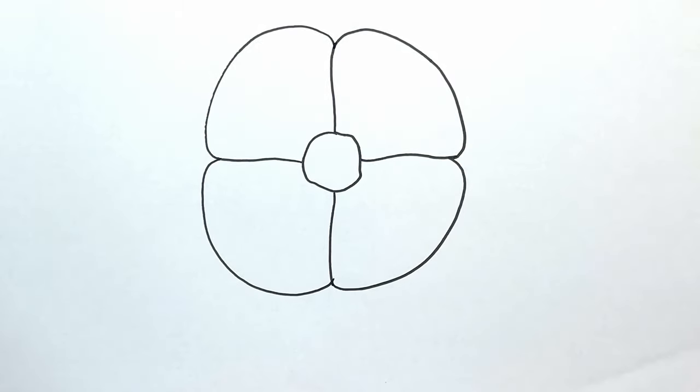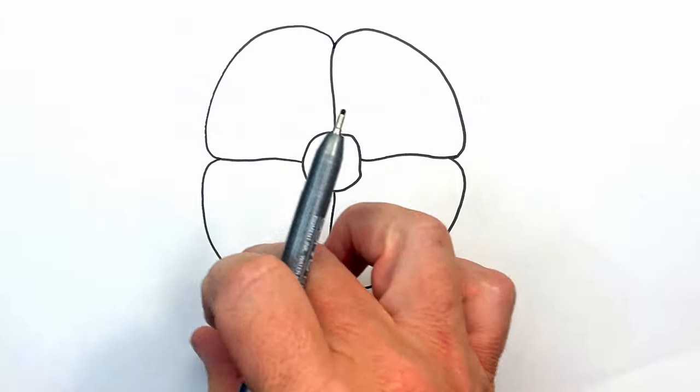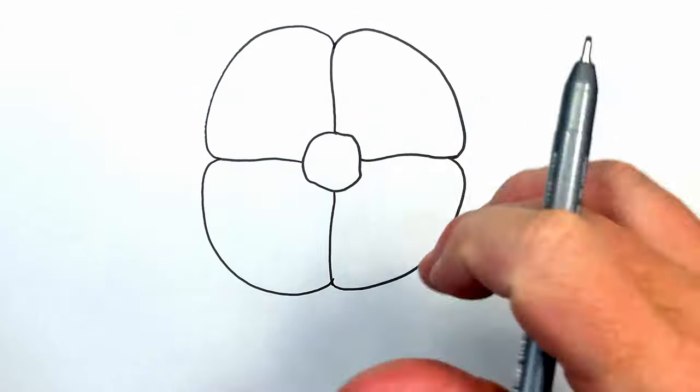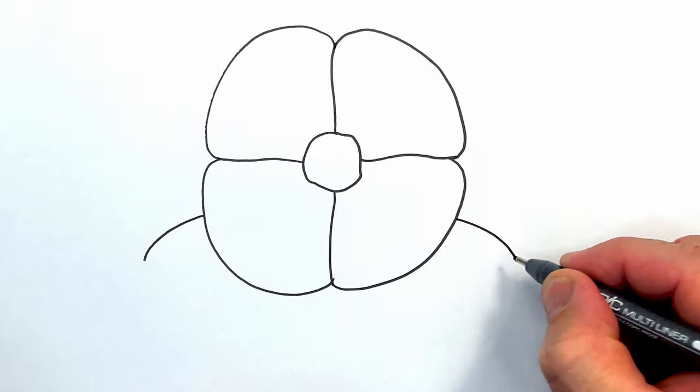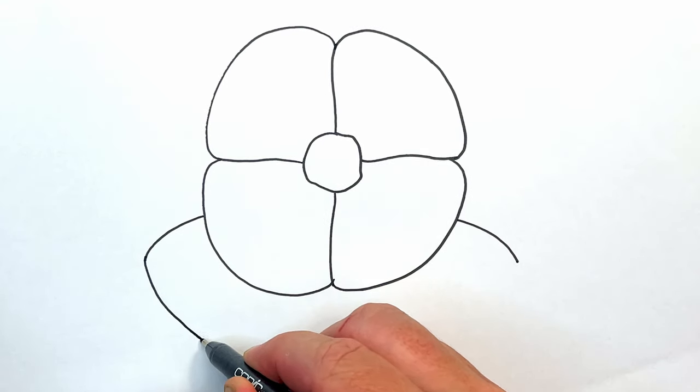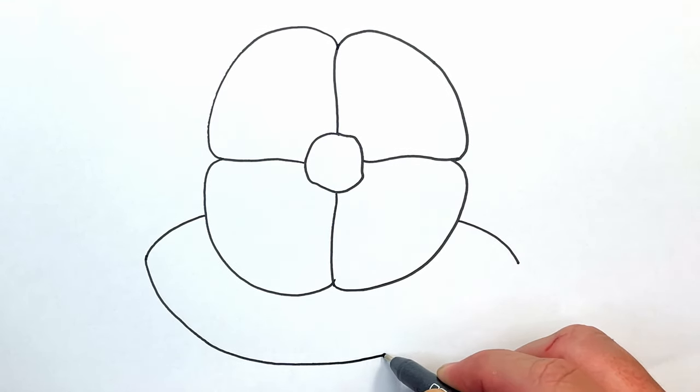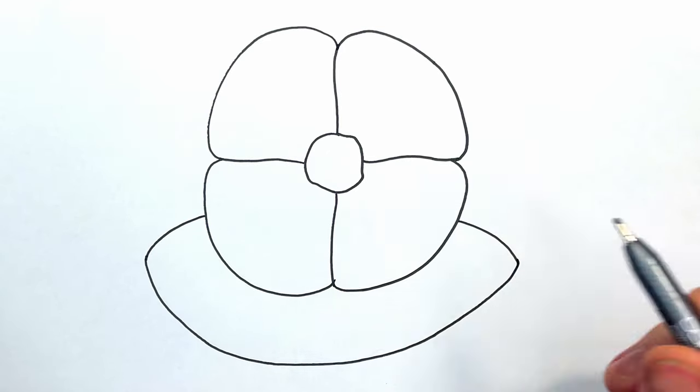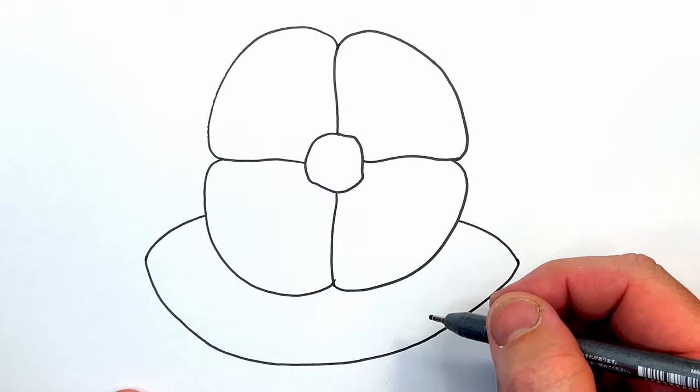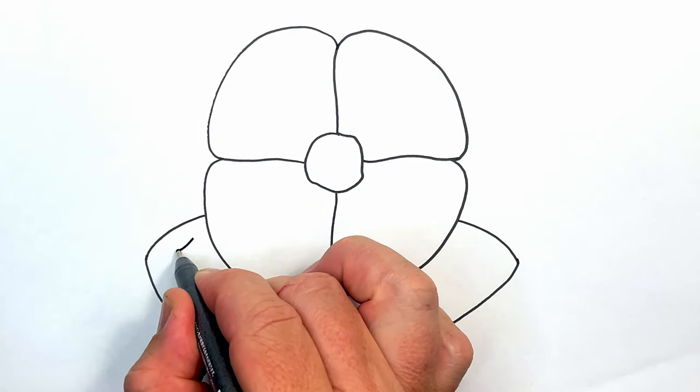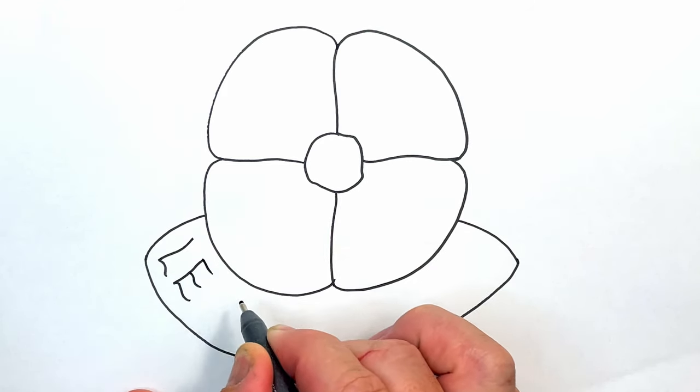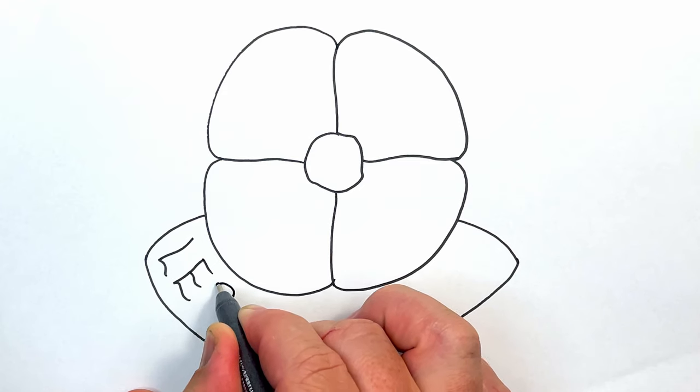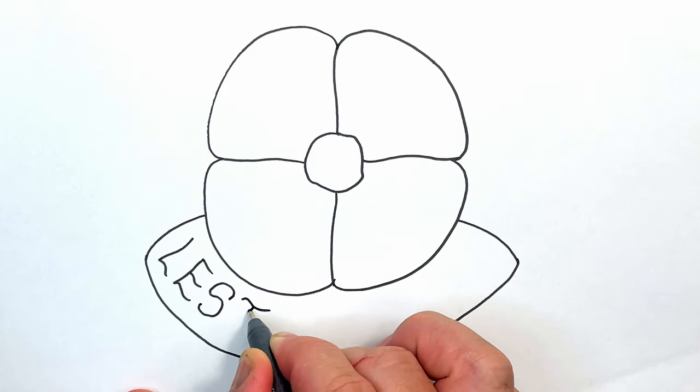Now underneath here we're going to put a little ribbon that says Lest We Forget. So I'm going to start with a line here, and do the same on the other side, and then that's going to curve around like this, and then come back around. Now we need to make sure we have enough space for Lest We Forget. So let's start with the L, E, S, T,